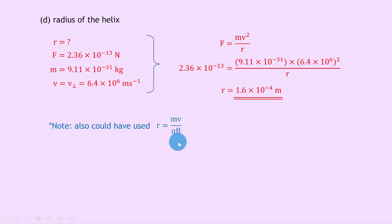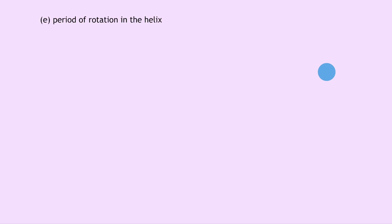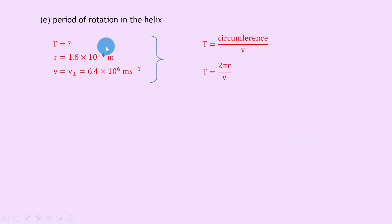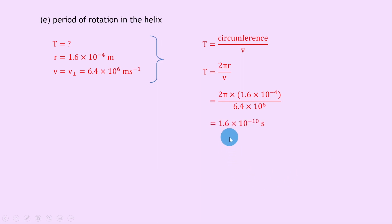Part e: calculate the period of rotation. We'll use the circumference method: period t equals circumference over speed, which is 2 pi r over v, where v is the perpendicular component. Radius is 1.6e-4 meters and the perpendicular velocity is 6.4e6 meters per second. So t equals 2 pi times 1.6e-4 divided by 6.4e6, giving 1.6 times 10 to the minus 10 seconds.